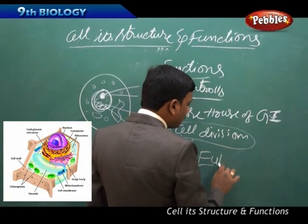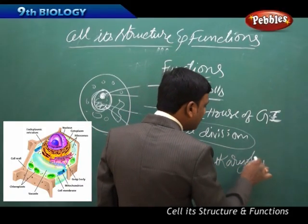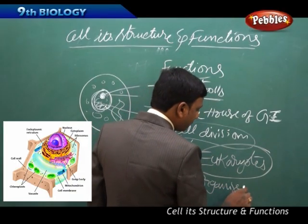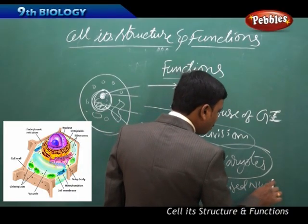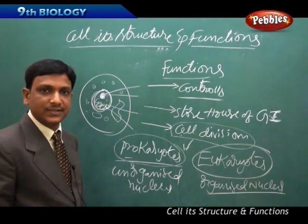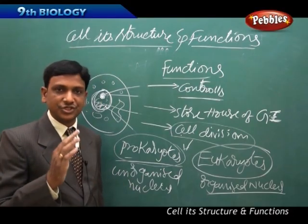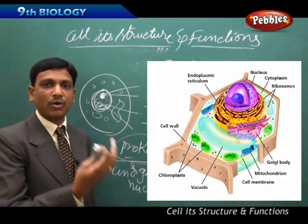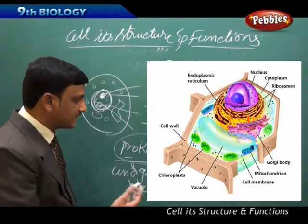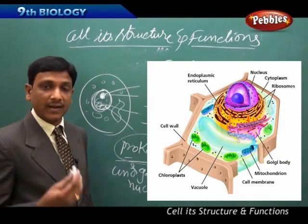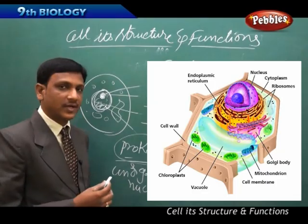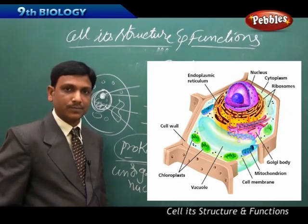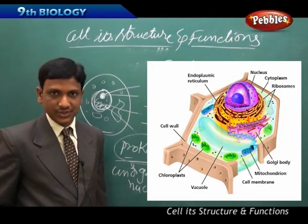The other type is eukaryotes. Eukaryotes have an organized nucleus, meaning the nucleus has a specific shape, contains nucleoplasm and nuclear material, and is bound by a nuclear membrane. That is called an organized nucleus, and organisms that have an organized nucleus are called eukaryotes. This is how organisms are divided into prokaryotes and eukaryotes based on the nucleus.